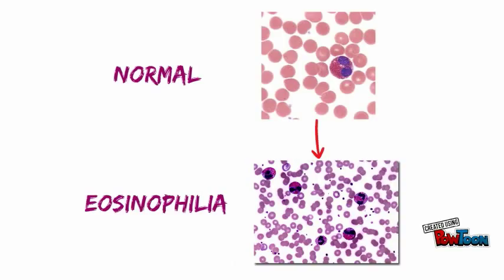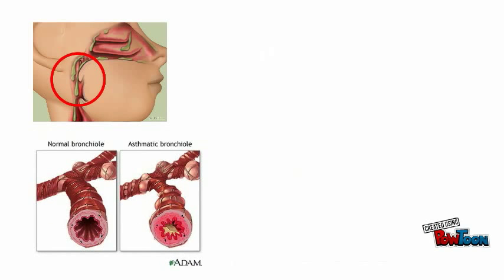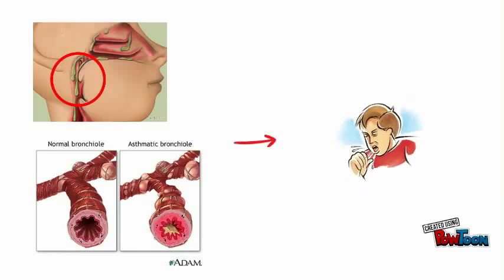The overall inflammation in the airway leads to increased mucus production as well as the tightening of the muscles that line the airways, both of which contribute to the obstruction of airflow and the symptoms of asthma.